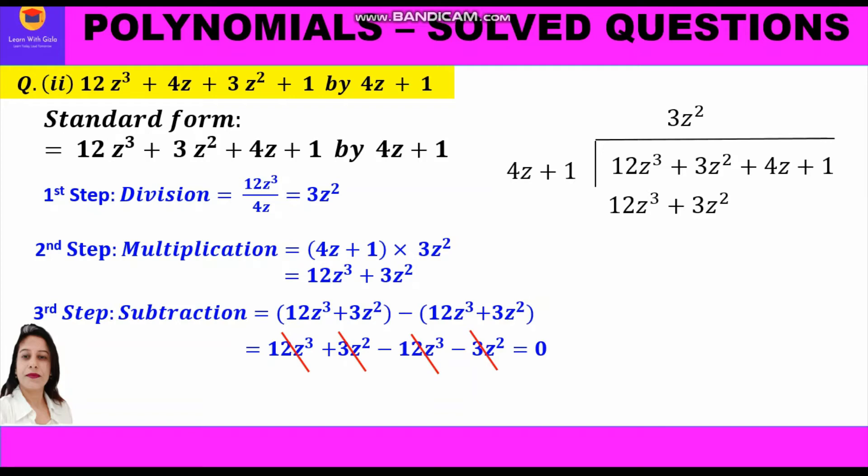This was the horizontal way of doing it. In the vertical method, we write a minus sign just below the product obtained in the second step, then change the sign: plus 12z³ becomes minus 12z³, and plus 3z² becomes minus 3z².